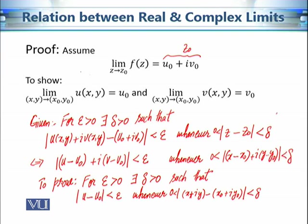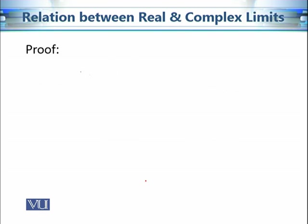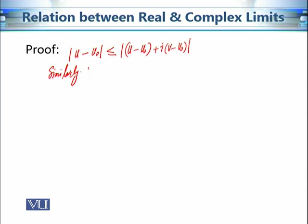We are allowed to use only the given facts. Now let's see how to prove this. Using the observation that |u − u₀| is less than or equal to |u − u₀ + i(v − v₀)|, and similarly |v − v₀| is less than or equal to |u − u₀ + i(v − v₀)|, we can easily prove our statement.